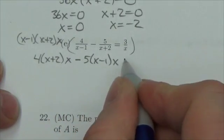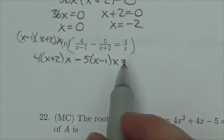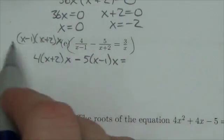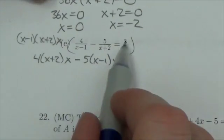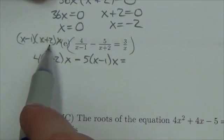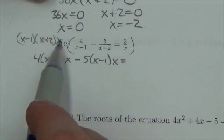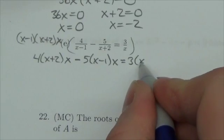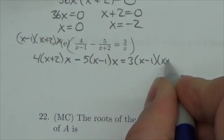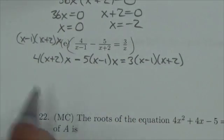On the right hand side, everything is getting multiplied by this common denominator. I would multiply 3, the numerator, by x minus 1, x plus 2, x, but this time the x's are going to cancel, and so what I'll be left with is 3 x minus 1 x plus 2.